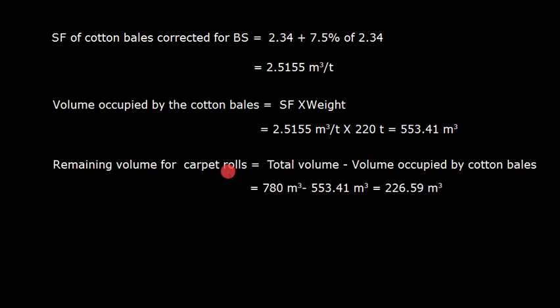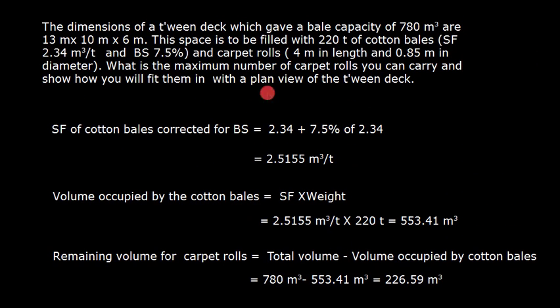Now remaining volume for carpet rolls will be the total volume minus volume occupied by cotton bales. We know that the capacity of this twin deck is 13 × 10 × 6 that is 780 cubic meters. This is also given here, 780 cubic meters.